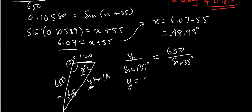So y comes out to be 650 sine 139 over sine 35 degrees, which comes out to be 743.47 kilometers per hour.